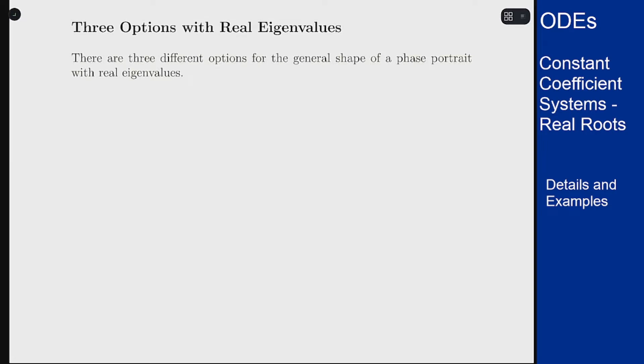In this video we'll talk about the three different options for phase portraits when you have real eigenvalues. There's three main options here and they are based on the signs of the different eigenvalues in the problem.